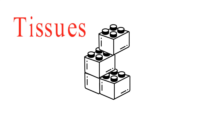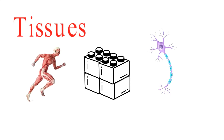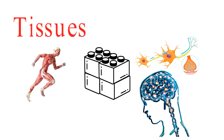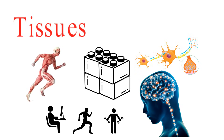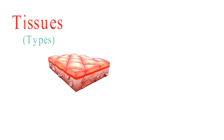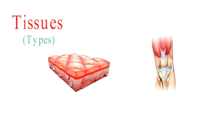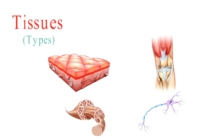So, let's start with the basics. Tissues are like the building blocks of our bodies — groups of specialized cells that team up to perform specific tasks. These tasks are vital for the proper functioning of our body, and tissues play a crucial role in making that happen. There are four main types of tissues in the human body: epithelial tissues, connective tissues, muscle tissues, and nervous tissues.